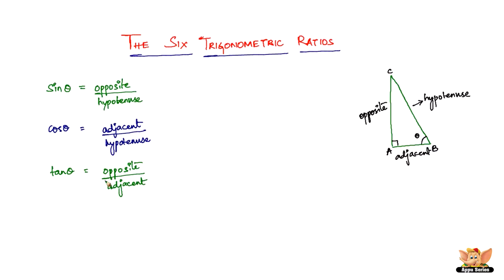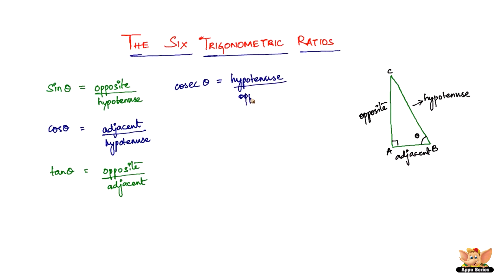These are the first three. There are three other trigonometric ratios, which are kind of a derivation from these three. The first of these is cosecant theta. Cosecant theta is nothing but the reciprocal of sine theta, so that is 1 divided by sine theta, which equals hypotenuse divided by opposite.